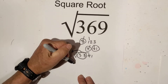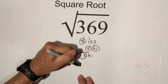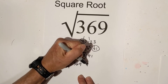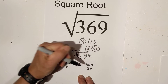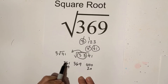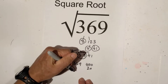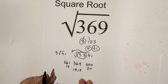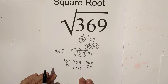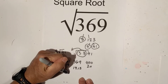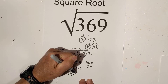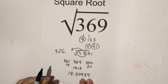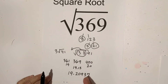Now if I were to estimate, I know that the square root of 361 is 19 and the square root of 400 is 20. So it's got to be somewhere between 19 and 20. It's kind of close to 361, so I would probably guess about 19.15. If you want it exactly to five decimal places, it is 19.20937. It is an irrational number, so this would continue.